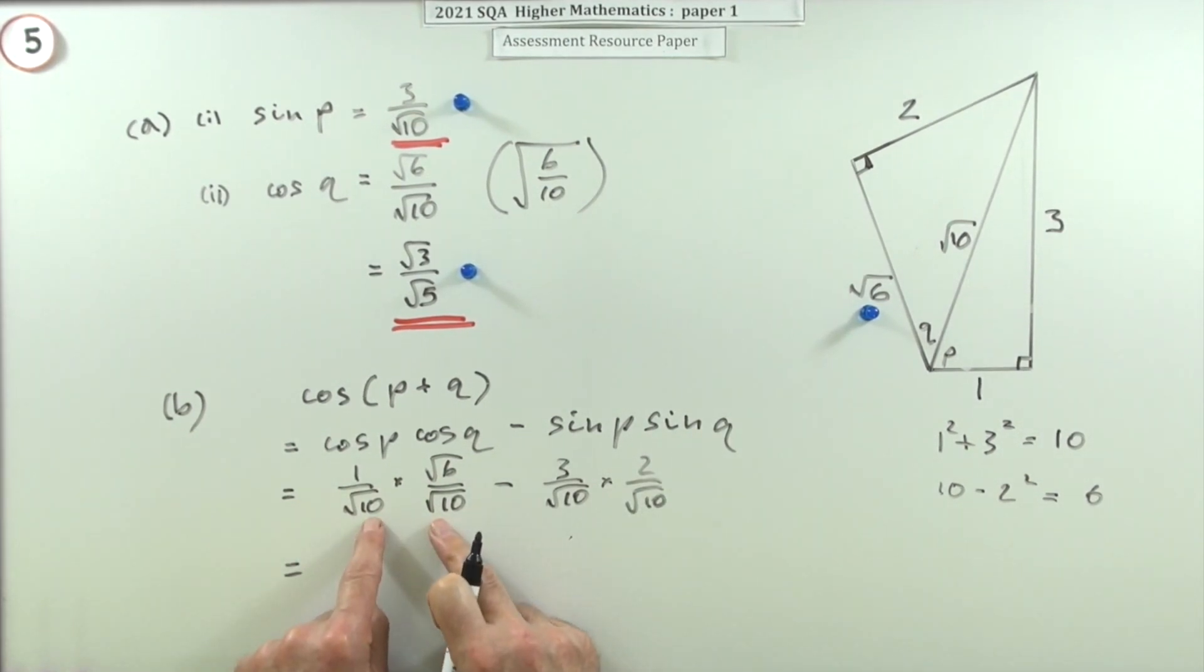So we've got a common denominator of 10. √10 times √10 is 10, so they're both out of 10, so the answer's out of 10. This part, the numerator is √6, and in this part, the numerator is 6. And there's not a lot you can do with that.